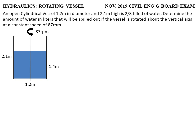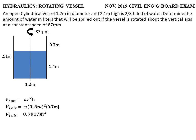Our direction to solve this problem is to compare the volume of the paraboloid to the volume of the initial air. Since what is being asked is the amount spilled out, let's compute first the volume of the initial air. The height of the air space is 2.1 minus 1.4, which gives 0.7 meter. The volume of the initial air is pi r squared h, where r equals 0.6 and h equals 0.7, giving a volume of 0.7917 cubic meters.